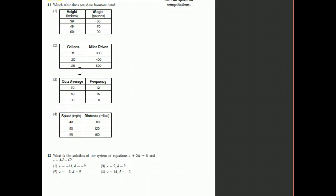For choice 3, it's a bit confusing. With quiz average and frequency, you don't pick a quiz average and have a frequency result — it's just facts you'd put on a bar graph. It's not a true independent/dependent relationship, so the answer is choice 3.